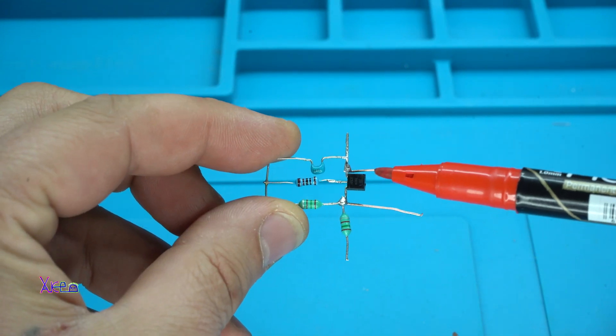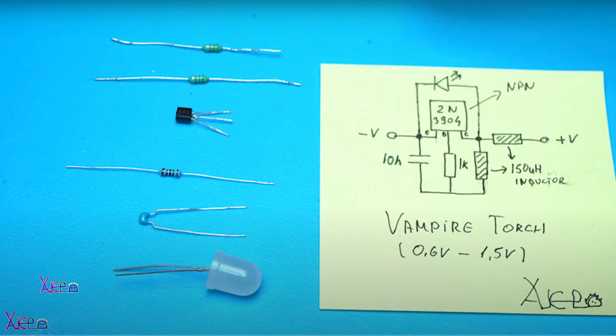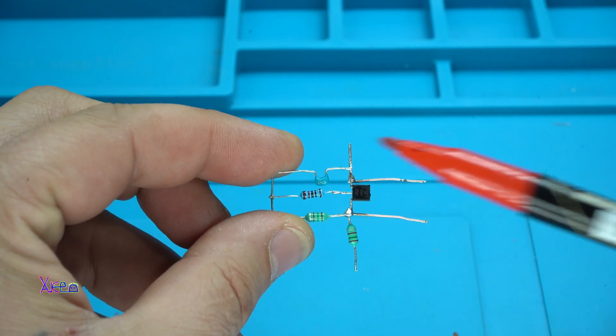This circuit or Vampire torch is made out of five electronic components like 3Ds and band resistor, one resistor, two coils and one capacitor.